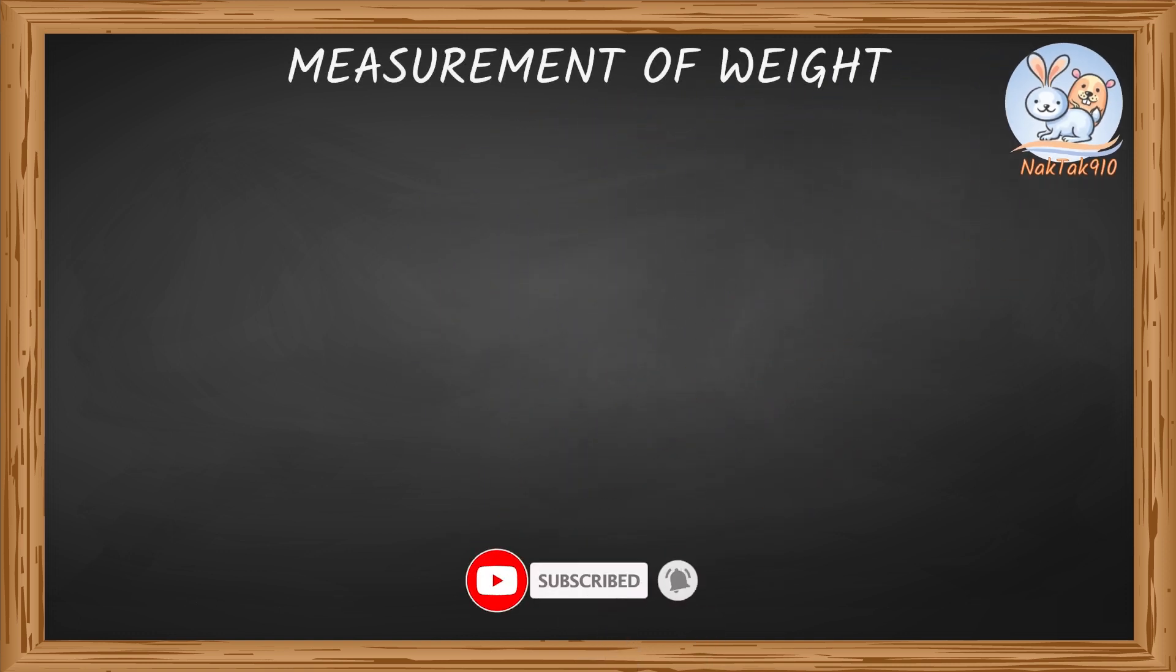Measurement of Weight. We usually say that this box is too heavy or this box is too light, but we don't know its exact weight. To be precise and accurate, and in order to know the weight of any object, today we're going to learn how to measure these weights.